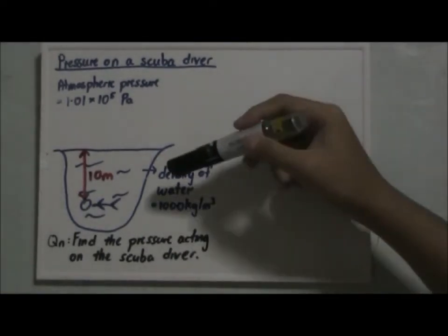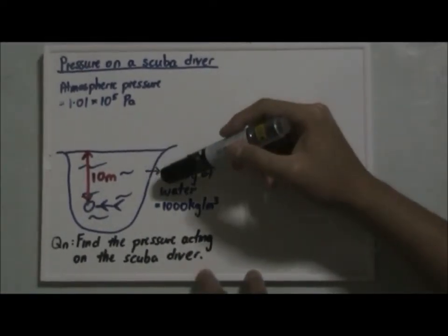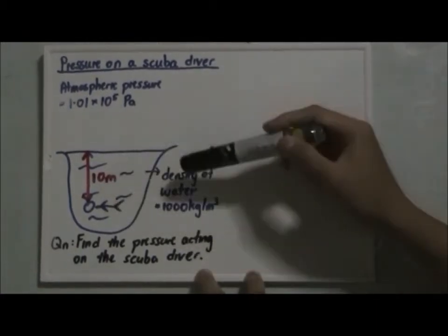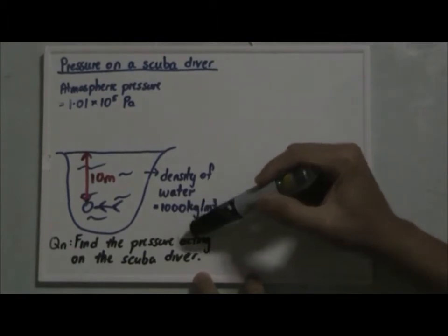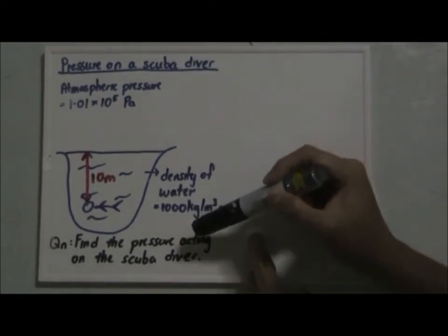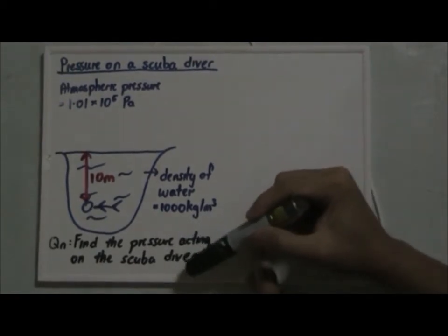Okay, take a look at this diagram here. There's a scuba diver that is 10 meters underneath the water, and the density of water is 1000 kg per meter cubed. So the question is to find the pressure acting on a scuba diver.